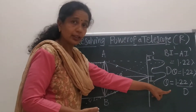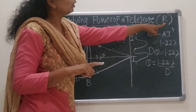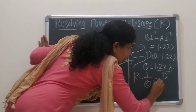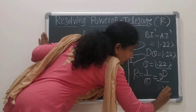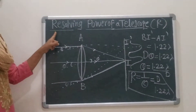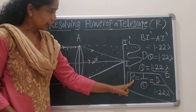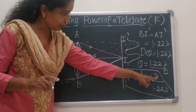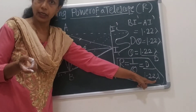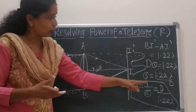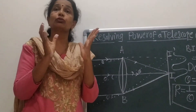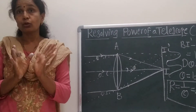The resolving power R equals the reciprocal of theta, so R equals d upon 1.22 lambda. The resolving power of a telescope depends upon d, the diameter of the objective, and the wavelength of light. To increase the resolving power, the diameter d should be large — meaning the objective lens should have a large diameter. But in practice, this is not possible beyond a certain limit.